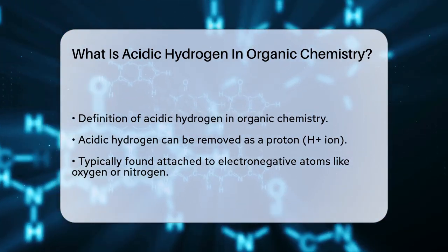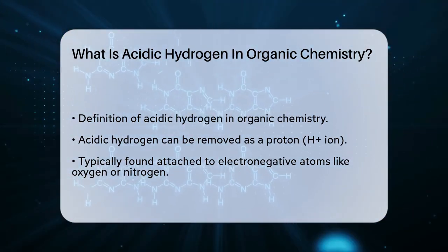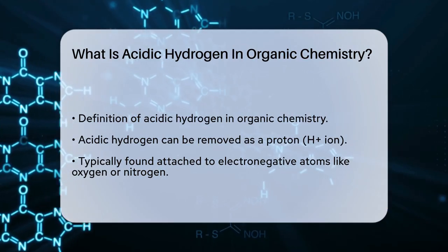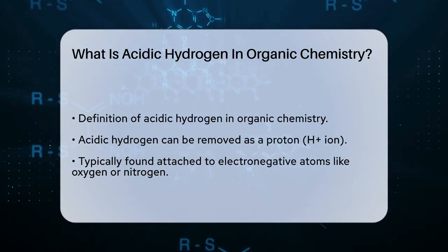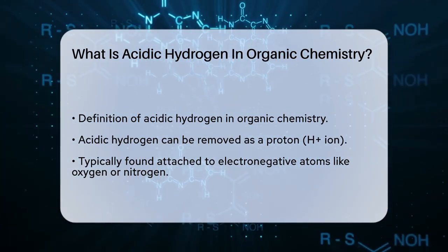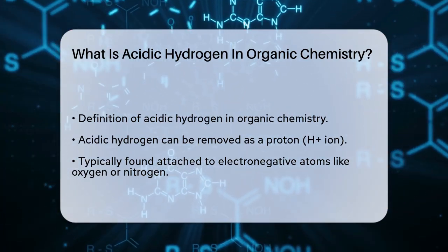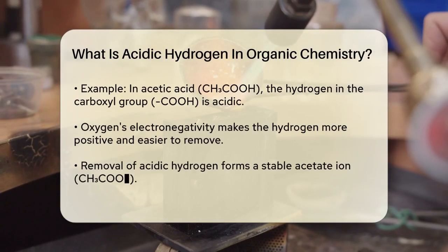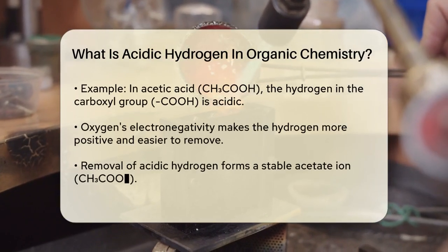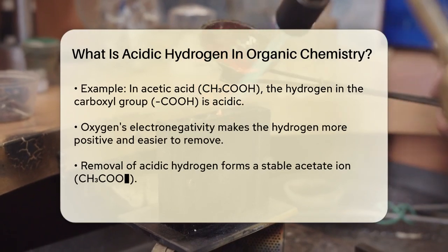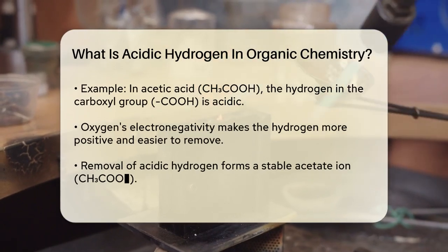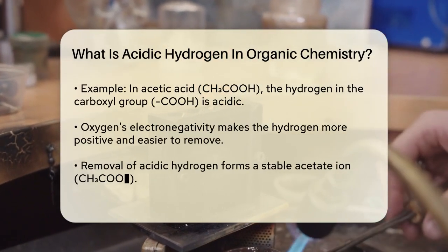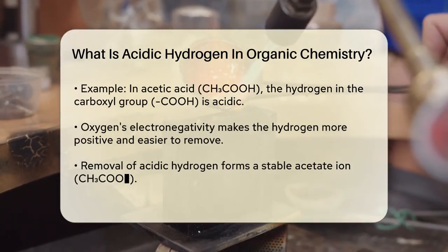This happens when the hydrogen is attached to an electronegative atom, like oxygen or nitrogen. For example, in acetic acid, CH3COOH, the hydrogen attached to the oxygen in the carboxyl group, COOH, is an acidic hydrogen. This is because the oxygen atom is highly electronegative, pulling electron density away from the hydrogen and making it more positive and easier to remove as a proton.